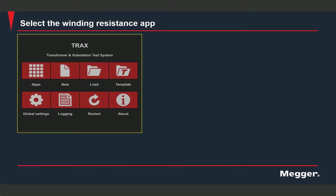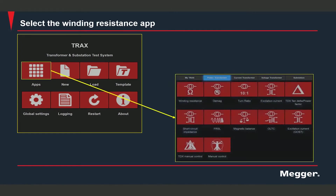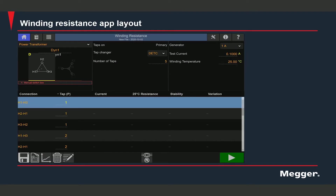To access the winding resistance app from the home screen you can select the apps option. You should be able to find the winding resistance app under the power transformer tab. Let's take a look at the winding resistance app.